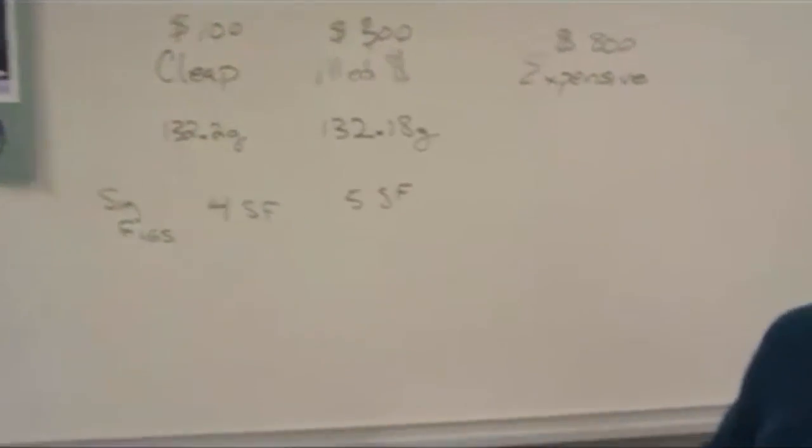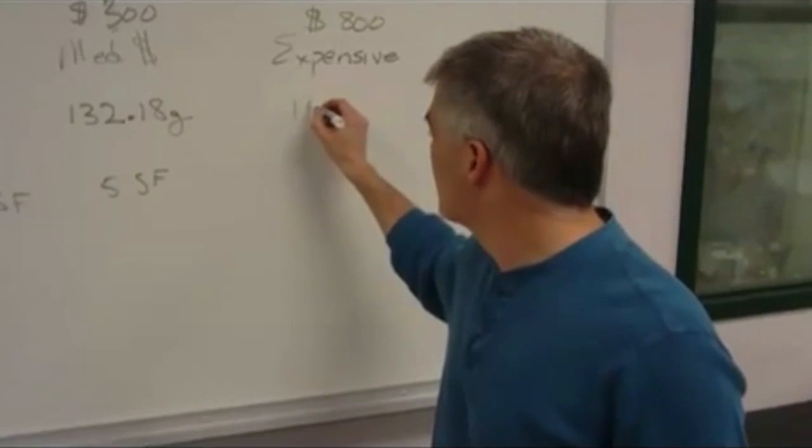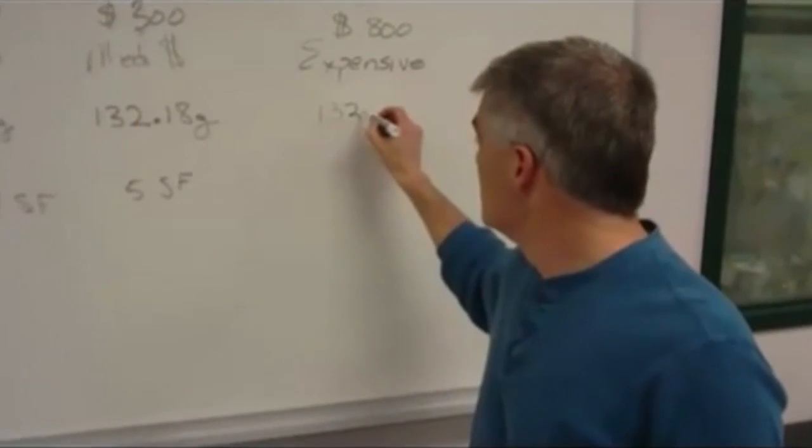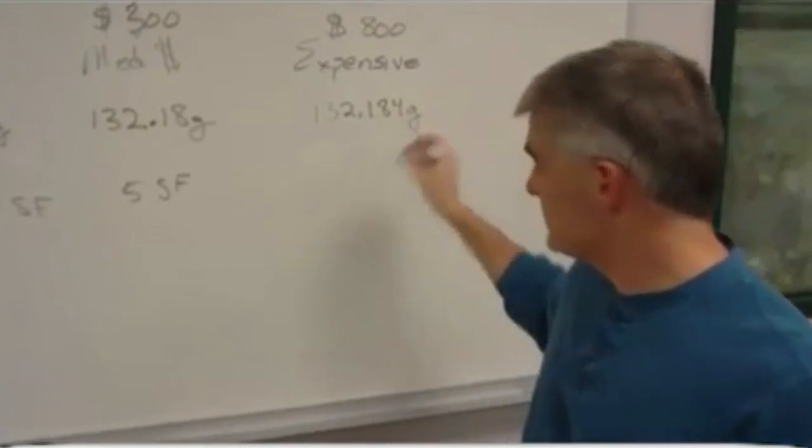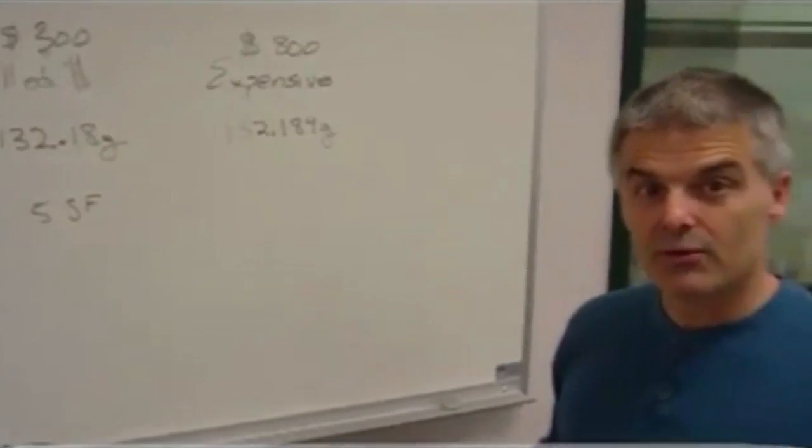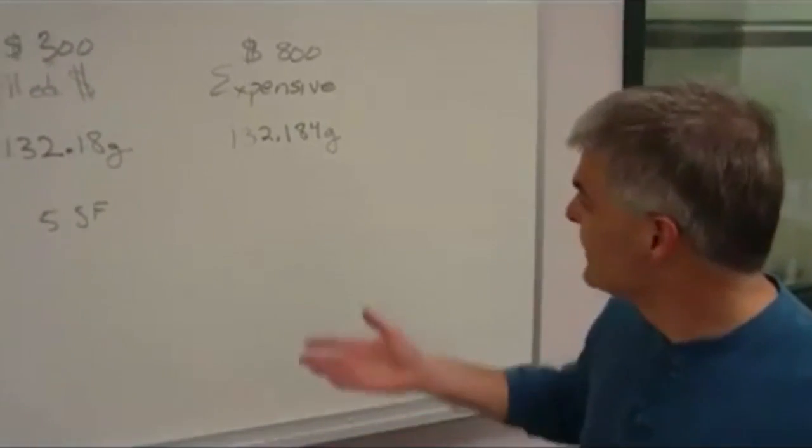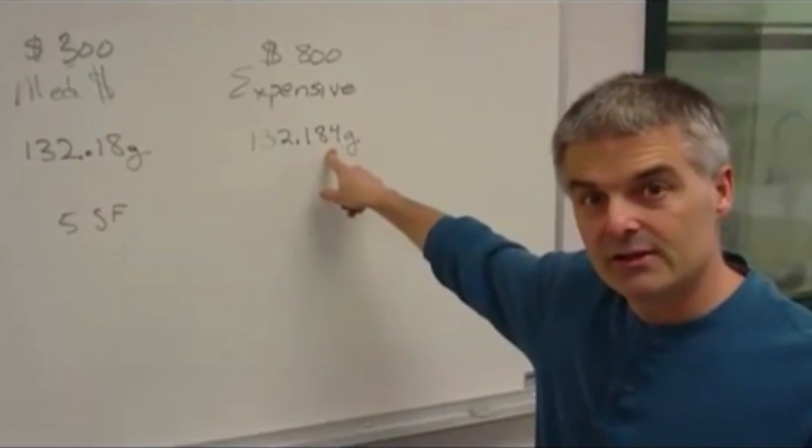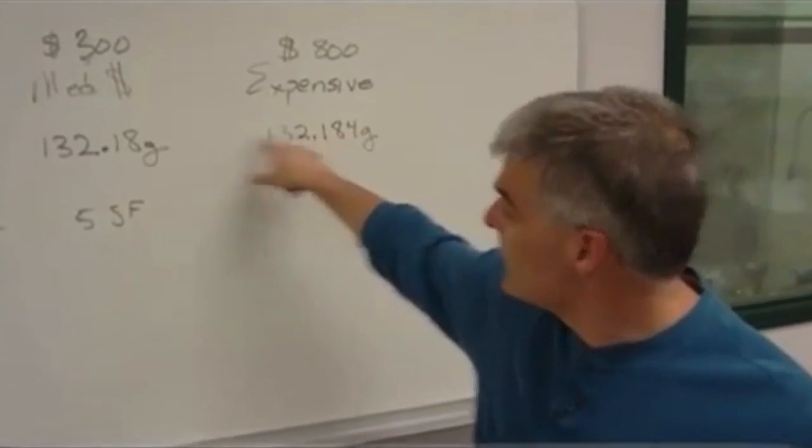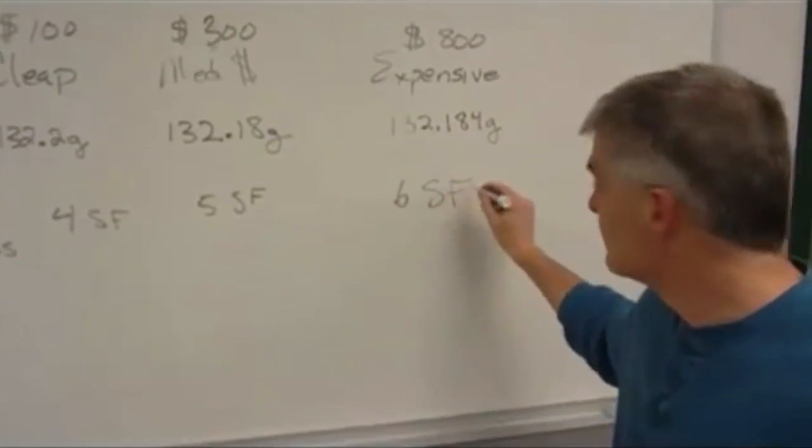Now, if I go to my expensive balance, and so if I place it on the expensive balance, and I read its reading, I get 132.184 grams. So for the $800 balance, I paid more money for the extra digit. And the 0.18 is actually rounded of this number, isn't it? So they round, this number rounds to this, which rounds to this. And of course, we would say that this is accurate to six significant figures.